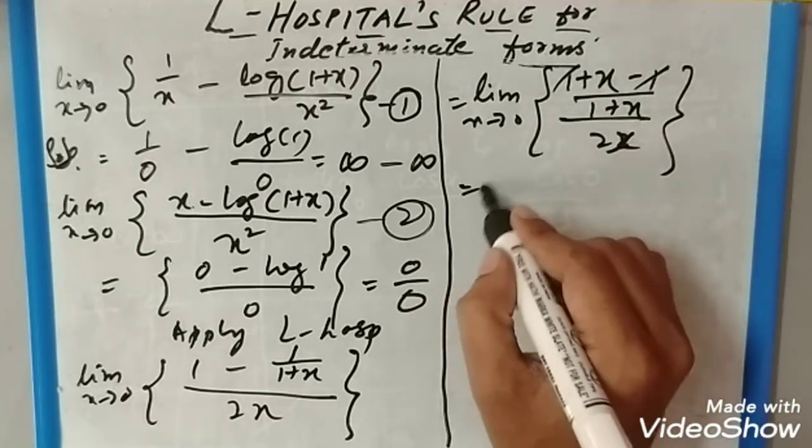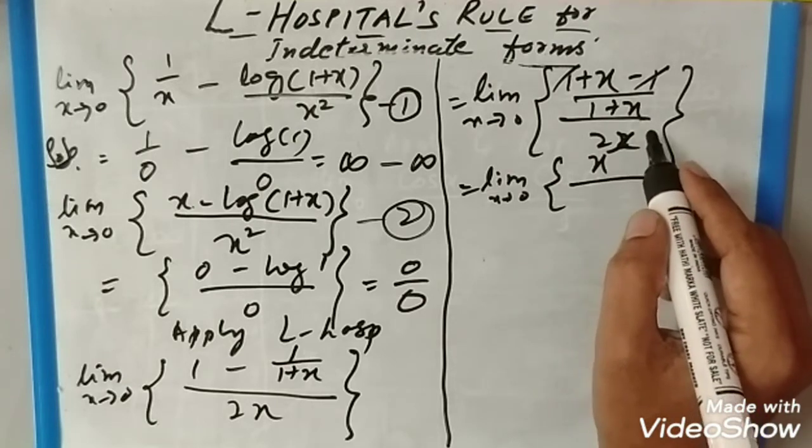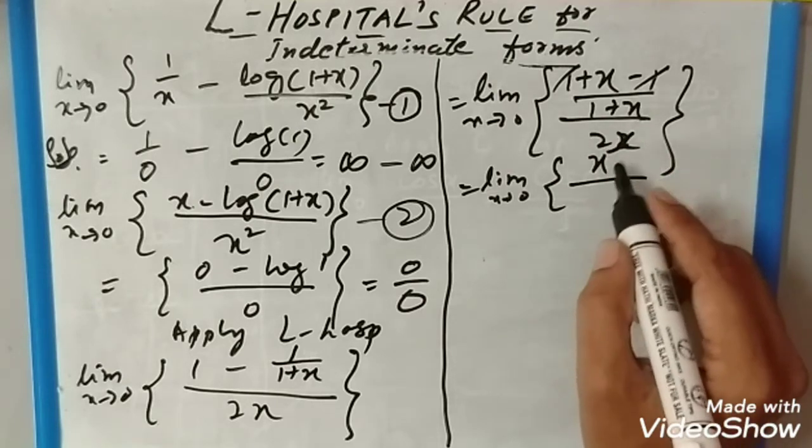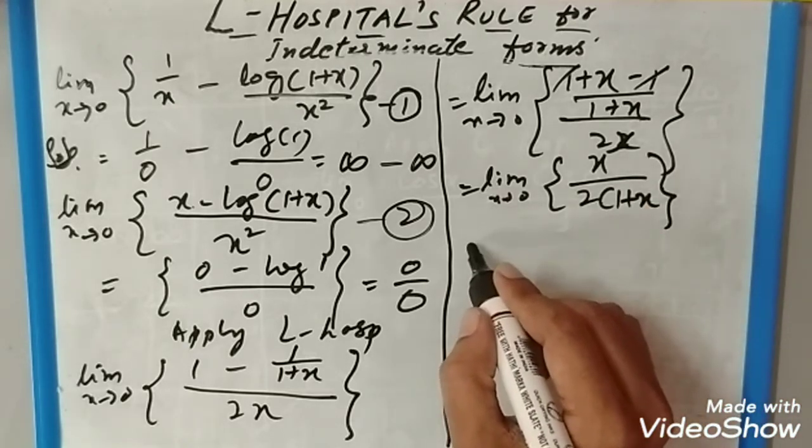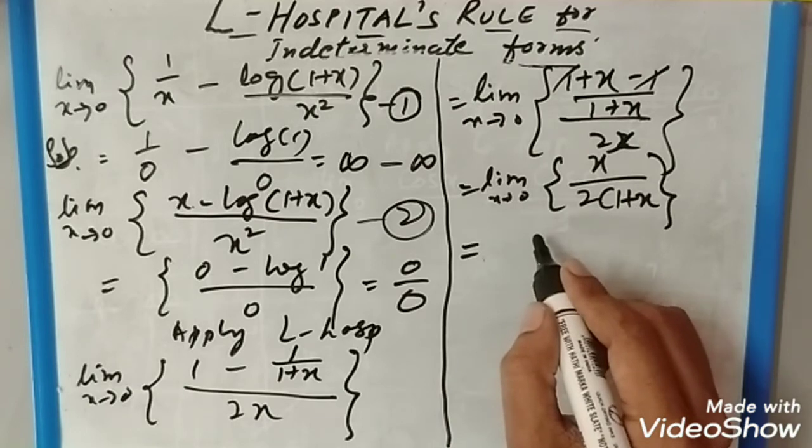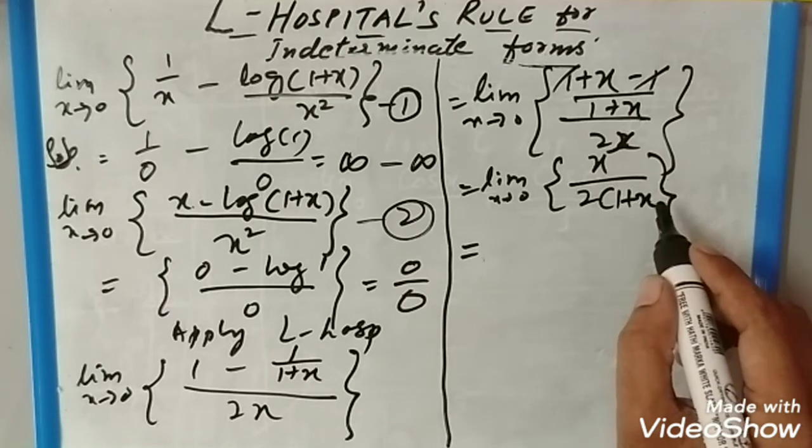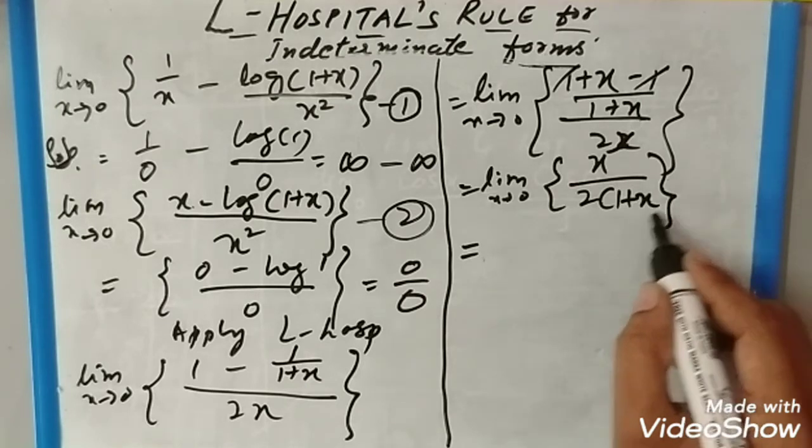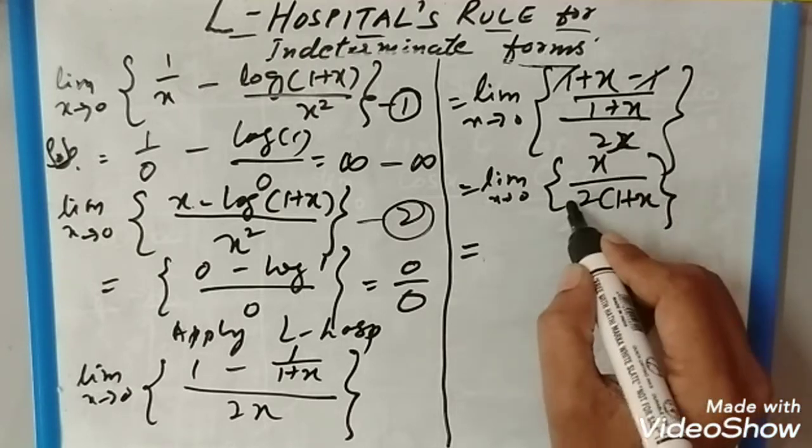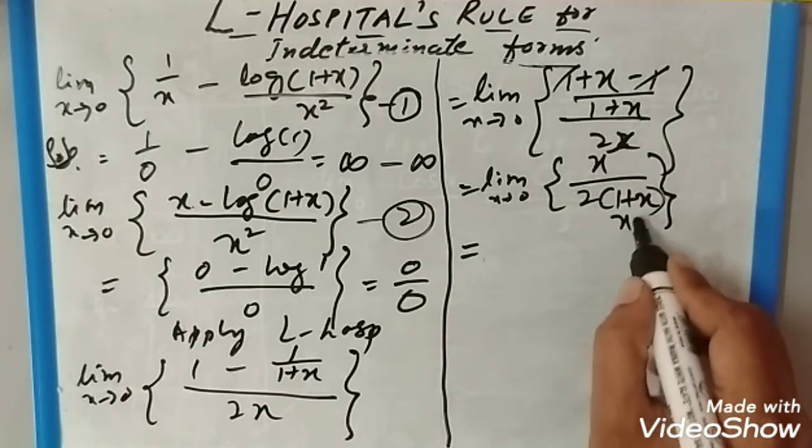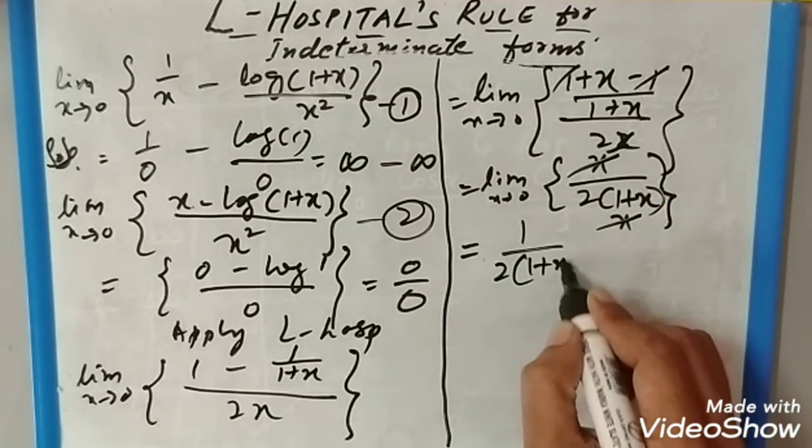So 1 and 1 cancel. Remaining is limit x tends to 0, x divided by 2(1+x). This x cancels with this x, so we will be remaining with 1/(2(1+x)).